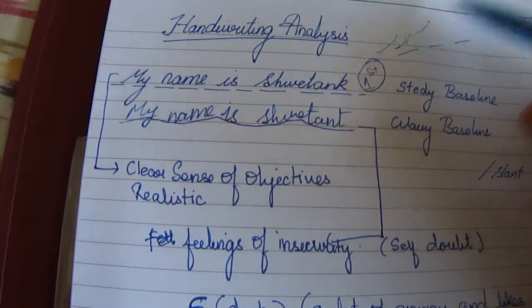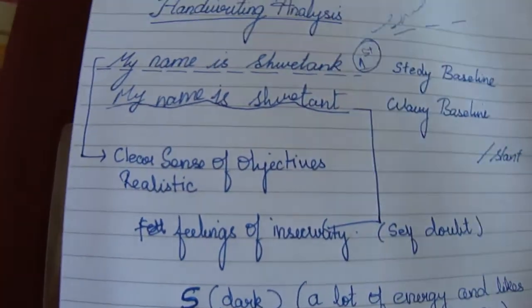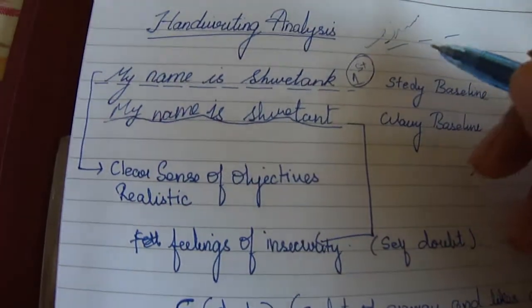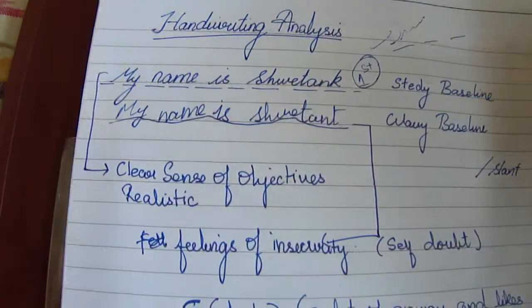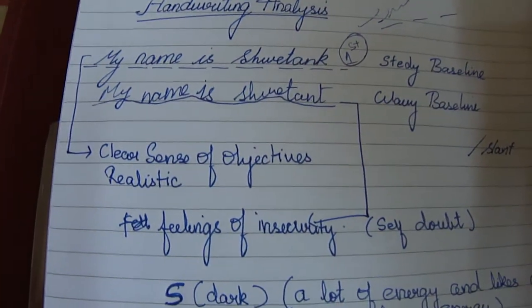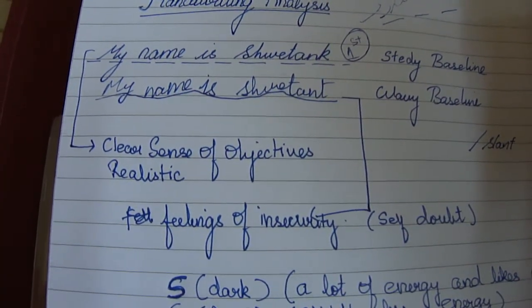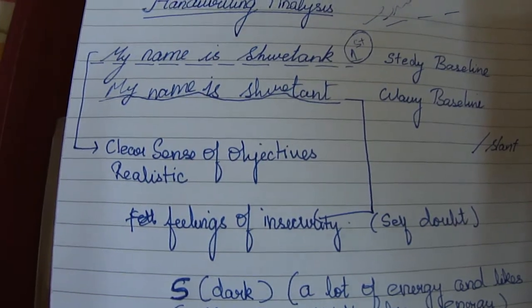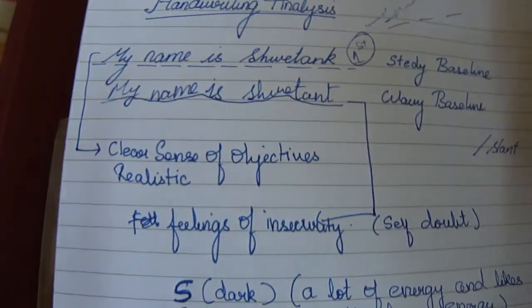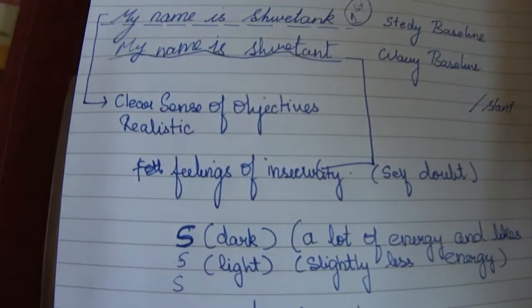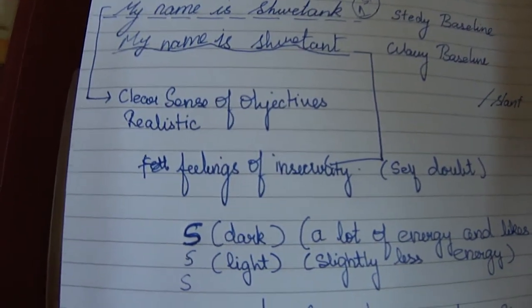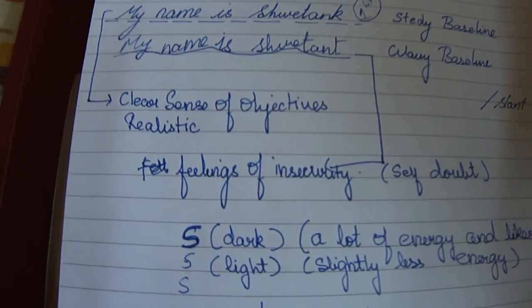It goes upwards, it means that you are more positive or optimistic. Whereas if it starts going down, it means a bit of pessimism. But if the combination is there, it results in a more unsteady or wavering nature. A wavy baseline means a wavering nature, whereas a steady baseline makes you more steadfast and stable.